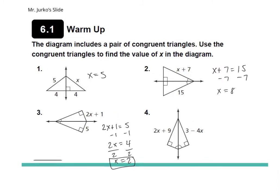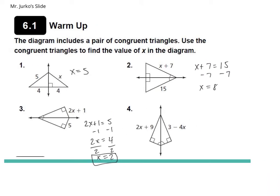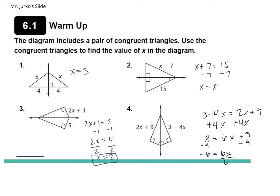For the last one, same thing — you're going to set those both equal to each other. The reason we're doing that is because it already tells us they're congruent triangles, so we're just matching up the corresponding parts. We get three minus four x equals two x plus nine. Add four x to both sides: three equals six x plus nine. Subtract nine: negative six equals six x. Divide by six: x equals negative one.